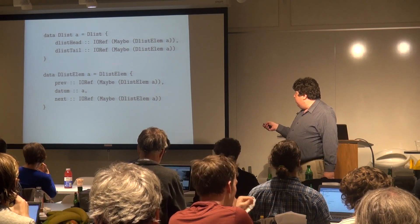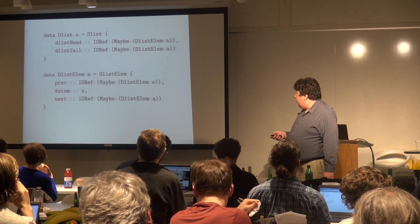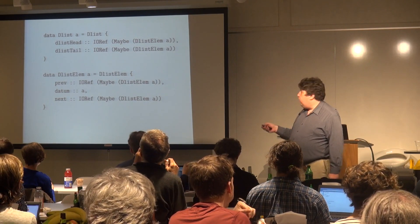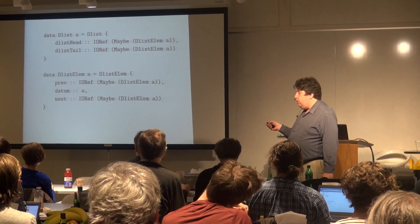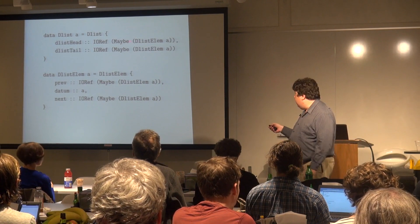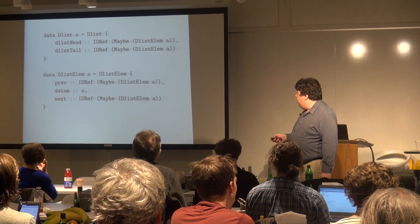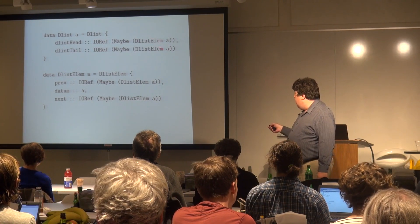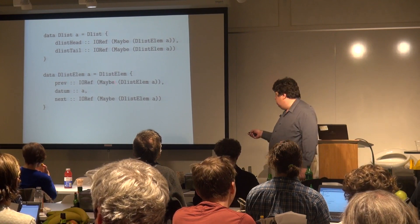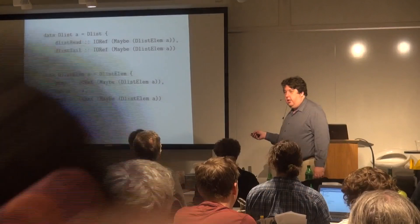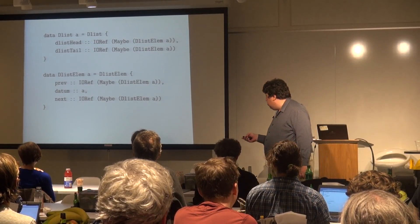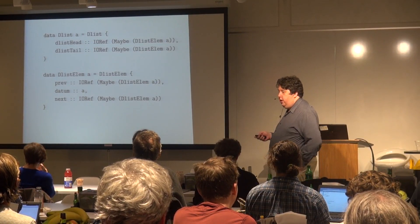We define the doubly-linked list structure — it contains two pointers, the head and the tail. The pointers are mutable, so they have to be IO refs. They can be null if the list is empty, so it's mapped into a Maybe. The element has three words: a previous pointer, a next pointer, and a datum. Works pretty much exactly how you would think.